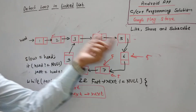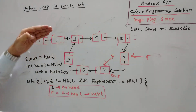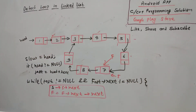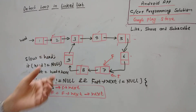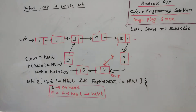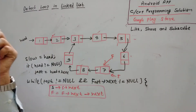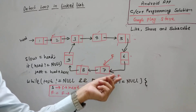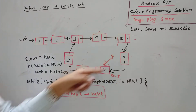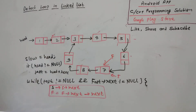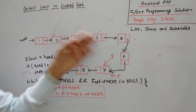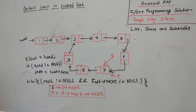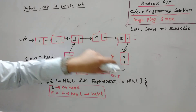Whenever slow and fast meet at the same node, that means there is a loop. Why? Because fast is running faster than slow - fast should always be ahead of slow in a non-looping list. But when both reach the same node, it means fast has completed more than one cycle and slow has completed fewer cycles, and they've come to the same node. So if there is a loop, fast and slow will always meet at some point within the loop.